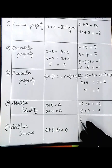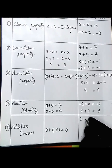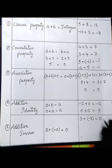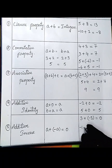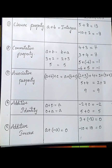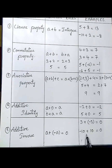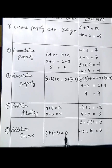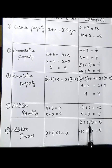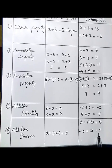Let's understand this with an example. If 3 is an integer, what should we add to 3 so that it becomes 0? We add minus 3, and we get 0. Similarly, minus 10 is an integer — if you add plus 10 to this, we get 0. So both integers are additive inverses of each other. If a is an integer and you add its opposite minus a, you get 0.